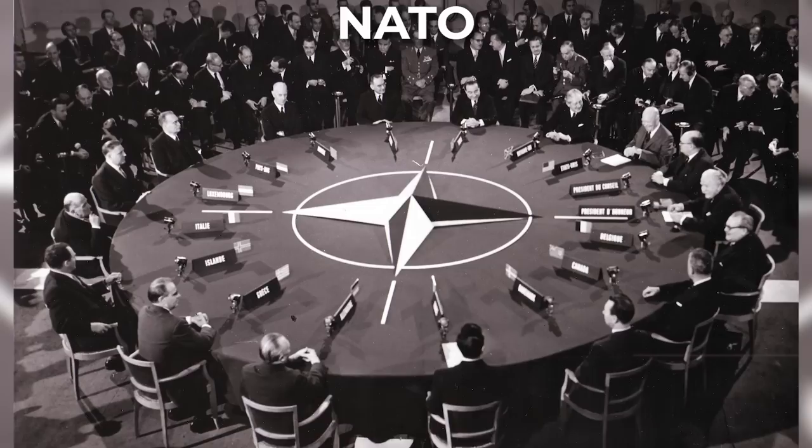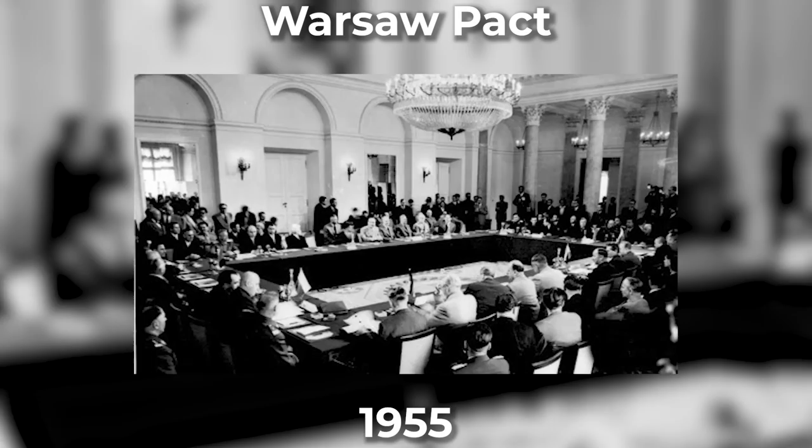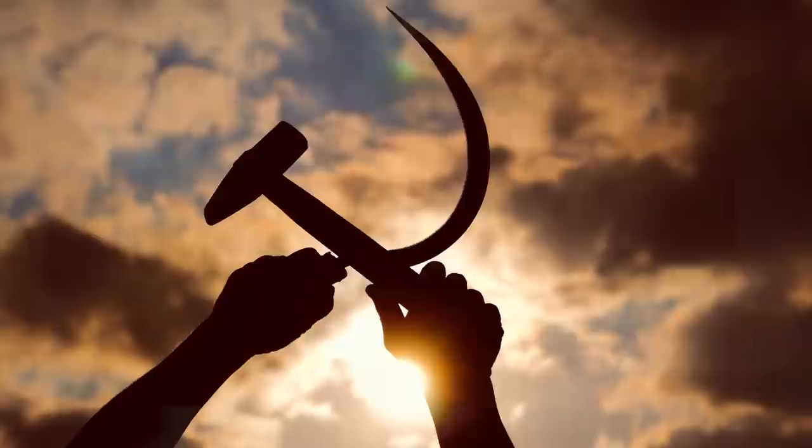Unfortunately, to the horror of the Western powers, the Soviets soon successfully field-tested their own nuclear bomb in 1949. To protect themselves against the now-enormous communist bloc, the Western powers formed an alliance by founding NATO, the North Atlantic Treaty Organization. A few years later, in 1955, the Eastern Bloc countries would sign the Warsaw Pact, forming a coherent alliance of their own.